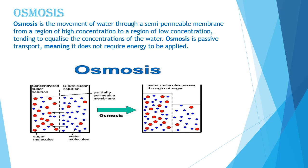Osmosis is the movement of water through a semi-permeable membrane from a region of high concentration to a region of lower concentration, tending to equalize the concentration of the water. Osmosis is also a passive transport and does not require energy. When two aqueous solutions are separated by a semi-permeable membrane, they are called osmotic solutions. The semi-permeable membrane allows to-and-fro movement of water or solvent molecules but is impermeable to solute molecules. When a plant or animal cell is placed in a salt or sugar solution, the movement of water molecules into or out of the cell through the plasma membrane depends on the solute concentration of the surrounding solution. The solution can be related to the cell as isotonic, hypotonic or hypertonic.